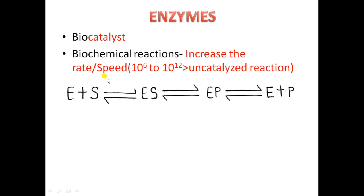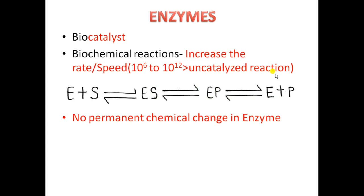In an enzyme-catalyzed reaction, the reactant with which the enzyme interacts is called the substrate. The enzyme combines with the substrate to form the enzyme-substrate complex. Then the enzyme acts upon this substrate and converts it into product, forming the enzyme-product complex, which on dissociation gives the free enzyme and the product. At the end of the reaction, the free enzyme is recovered in its original form, meaning there is no permanent chemical change which takes place in the enzyme.